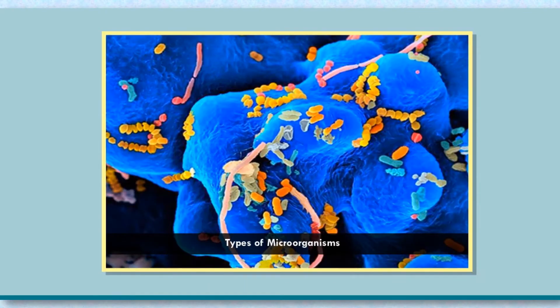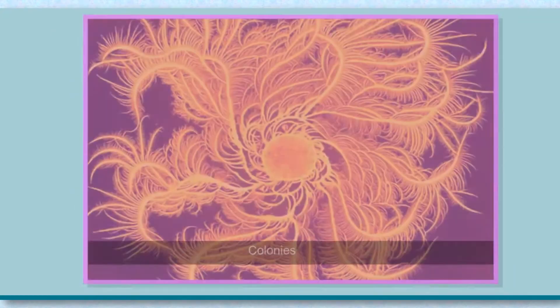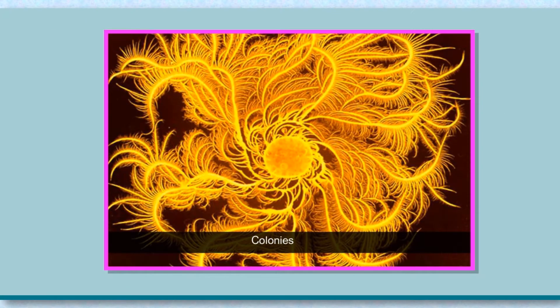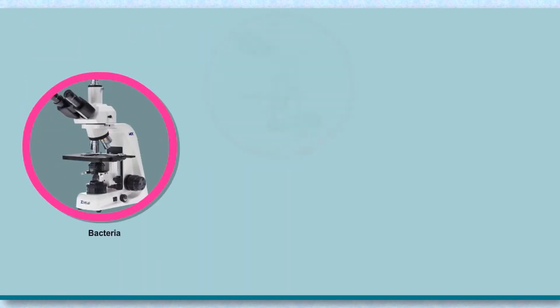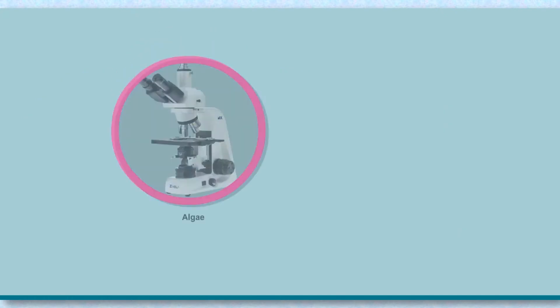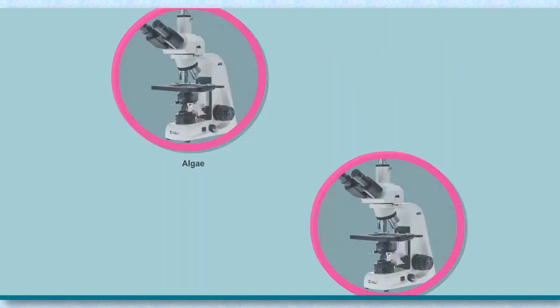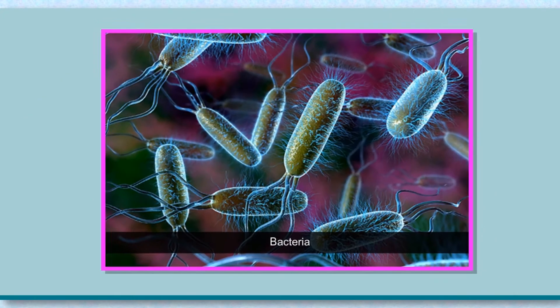Microorganisms are abundant and found everywhere. Some live alone; others grow in groups called colonies. Microbes can be divided into five categories: bacteria, protozoa, fungi, algae, and viruses.